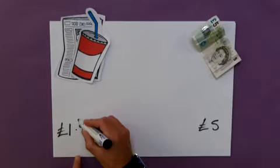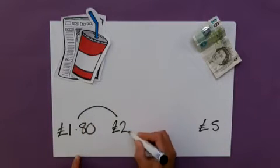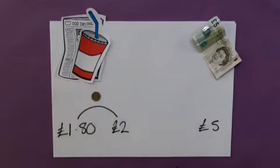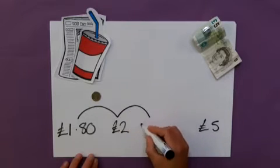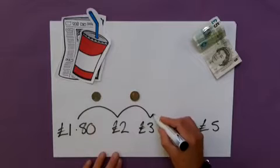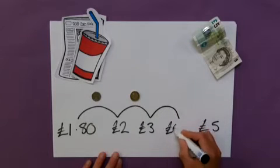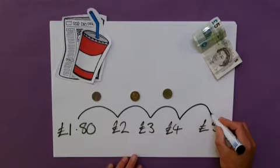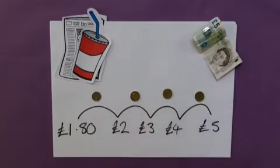The first jump I would make would be simply to get to £2.00, so that's 20p. The next jump, very simple, £3.00, that's a jump of a pound. Same thing again, to get to £4.00, and finally, to get to my £5.00, and there we are.